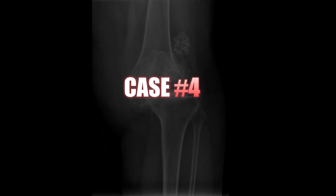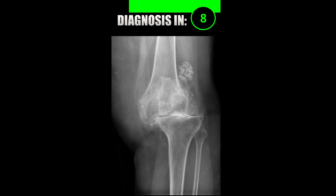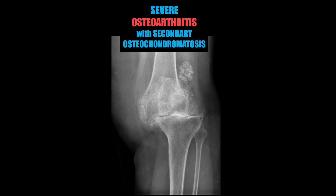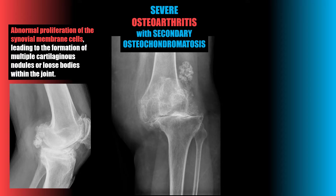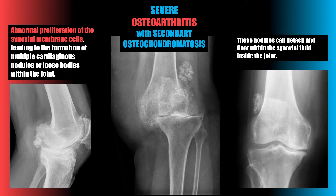Case number four is severe osteoarthritis with secondary osteochondromatosis. You'll notice severe loss of the femoral-tibial joint space and a large collection of ossification within the superior recess of the knee. Osteochondromatosis is an abnormal proliferation of the synovial membrane cells leading to the formation of multiple cartilaginous nodules or loose bodies within the joint. These nodules can detach and float within the synovial fluid inside the joint.